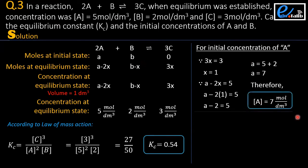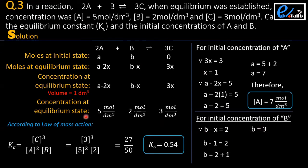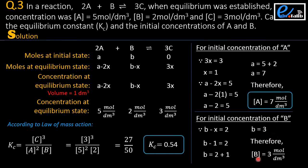For the initial concentration of B: the value of x is known to be 1. Putting x into the equation B minus x equals 2, the value of B is 3. Dividing 3 by the volume of 1 dm³, the initial concentration of B is 3 moles per dm³. This is the complete solution to the question.